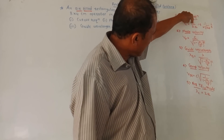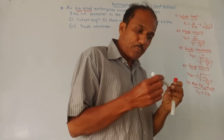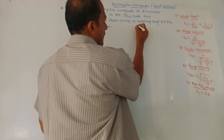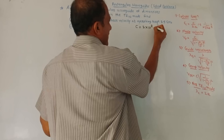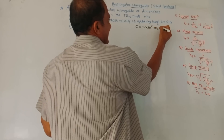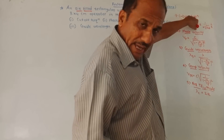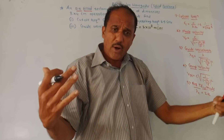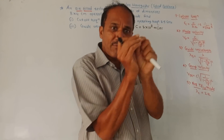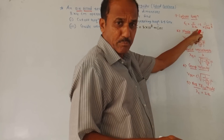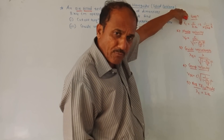The cutoff frequency formula is c upon 2a. This notation c represents the speed of light in free space, and we know that the value of speed of light is 3 × 10⁸ meters per second. In case of waveguides, the major dimensions are in terms of breadth and width. So a represents breadth of a waveguide, and c upon 2a is the formula to calculate cutoff frequency.